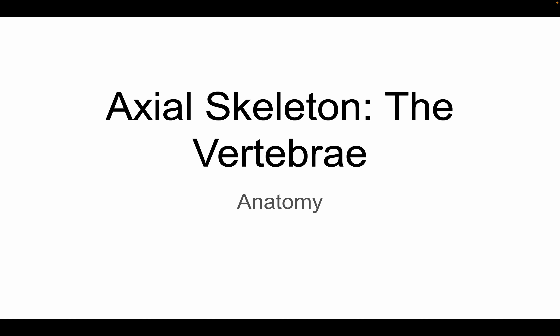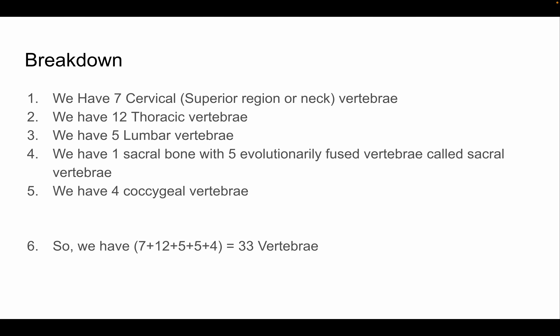We will be going over the axial skeleton, and this time we will be doing the vertebrae, which is the second part of the axial skeleton. Breaking down the vertebrae: we have seven cervical vertebrae in the superior neck region, 12 thoracic vertebrae which each articulate with one of the 12 ribs, five lumbar vertebrae, one sacral bone with five evolutionarily fused sacrovertebrae, and four coccygeal vertebrae — giving us about 33 vertebrae in total.